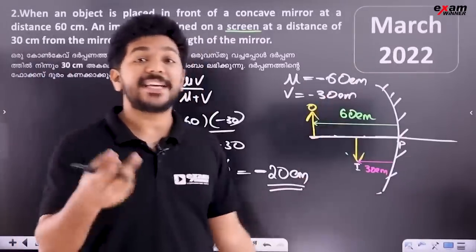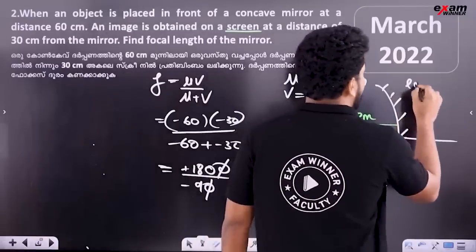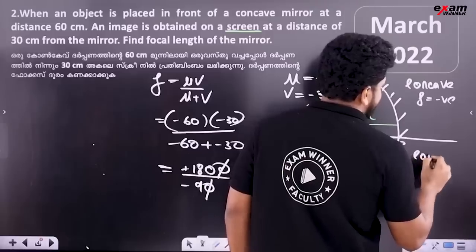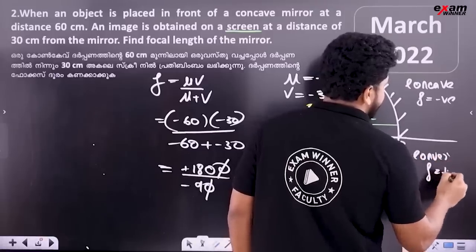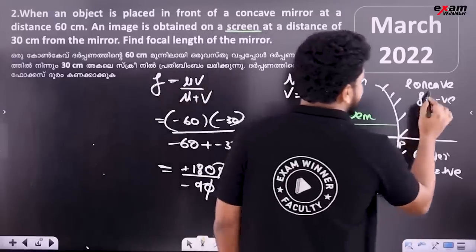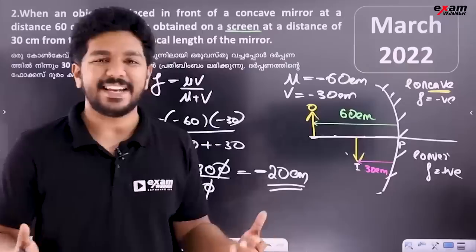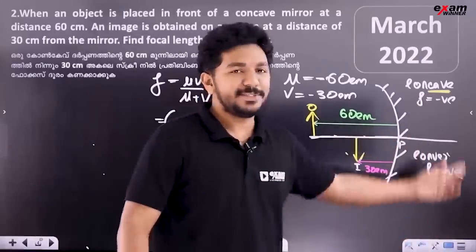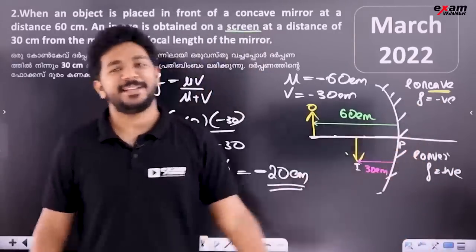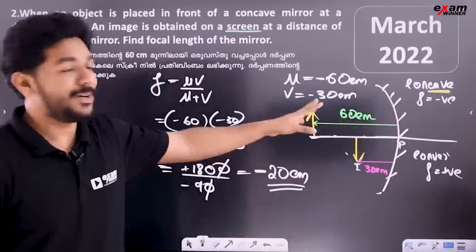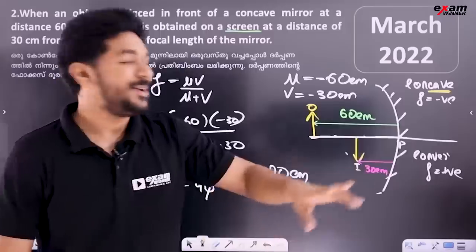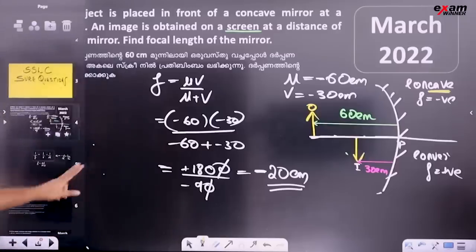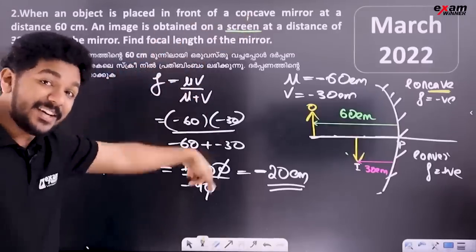This line is concave, so it is negative. Convex is positive. The trick is: if you are concave, it is negative. Concave lens is negative, convex lens is positive. If you are concave, it will be negative.